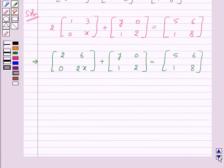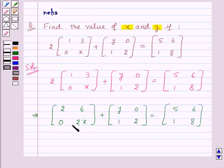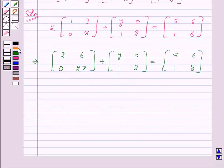Now we need to add these two matrices and the sum of two matrices is obtained by adding the corresponding elements of the two matrices. But the two matrices should be of same order. So here we will get a 2 by 2 matrix whose elements will be 2 plus y, 6 plus 0 that is 6, 0 plus 1 that is 1 and 2x plus 2.